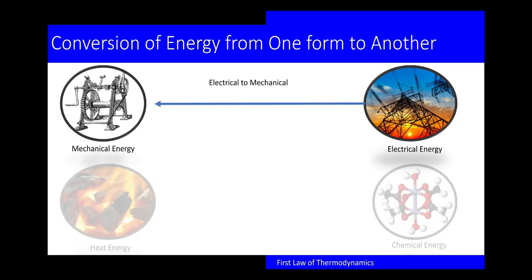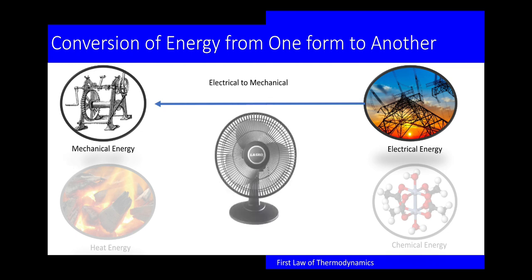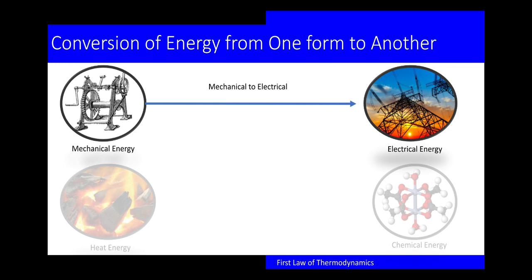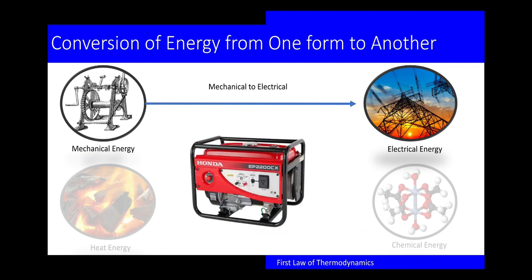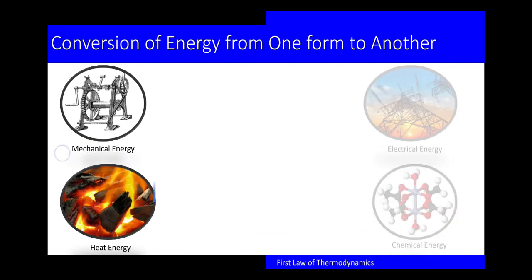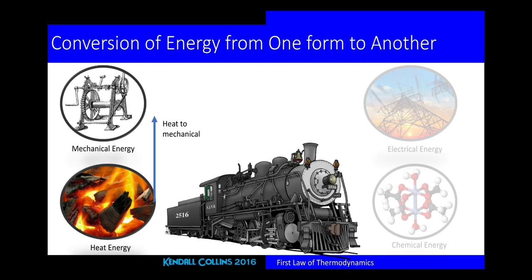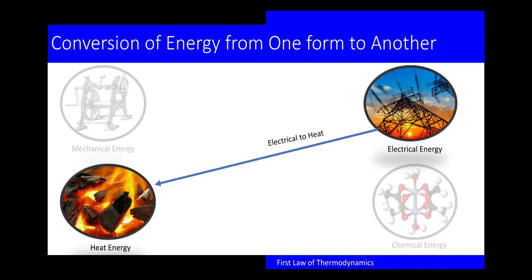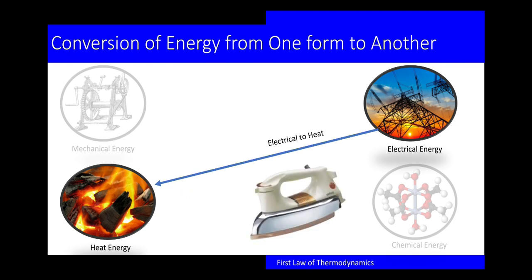The law of conservation of energy states that energy can only be converted from one form to another. The first example is electrical energy being converted to mechanical energy — the great example is the electric fan. The converse also happens: mechanical energy to electrical energy, for which the great example is your power generator. Next, heat energy converted to mechanical energy — the great example is your steam engine.